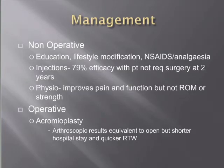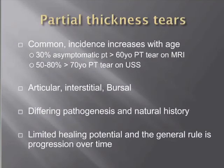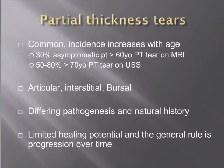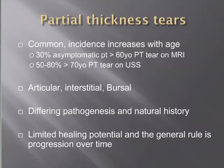Partial thickness tears are extraordinarily common and are an age-related phenomenon. 30% of completely asymptomatic patients over 60 will have a partial tear on MRI, increasing to 50-80% depending on the study once over 70 years of age. So 50-80% of well-functioning asymptomatic 70-year-olds will have either a partial or full thickness tear on MRI. They can be classified as articular-sided, interstitial, or bursal-sided, with slightly different pathogenesis and natural history depending on location.